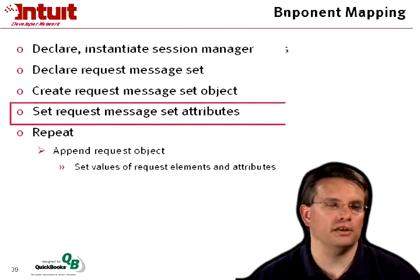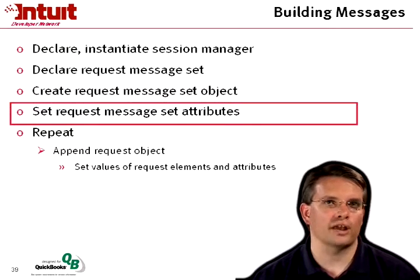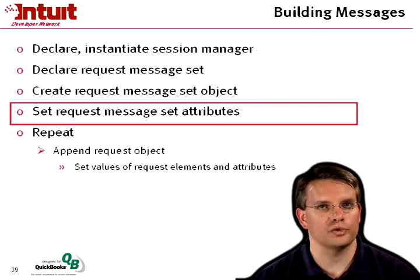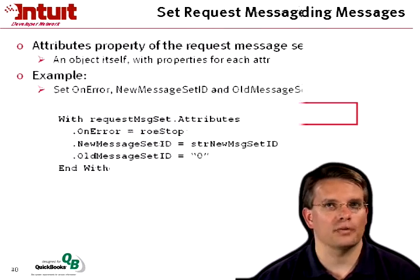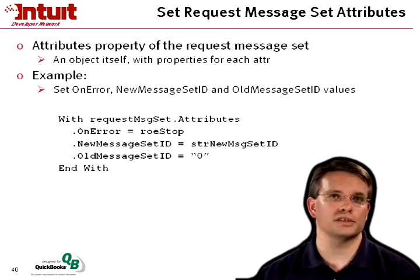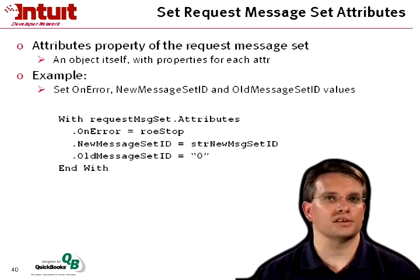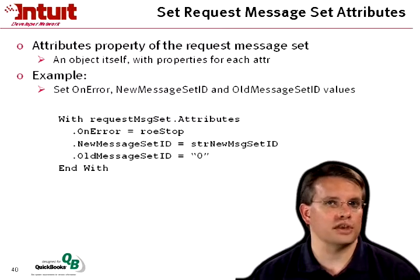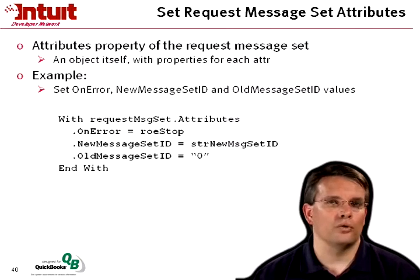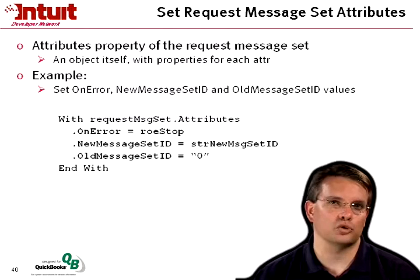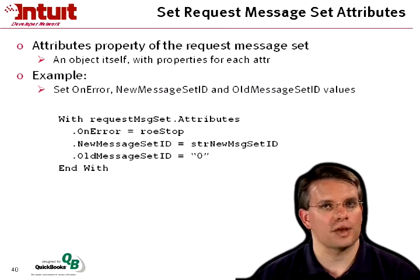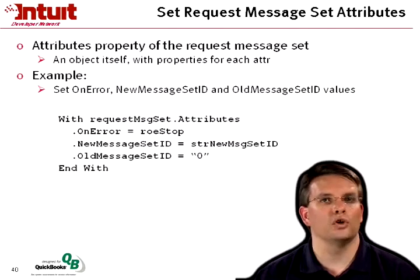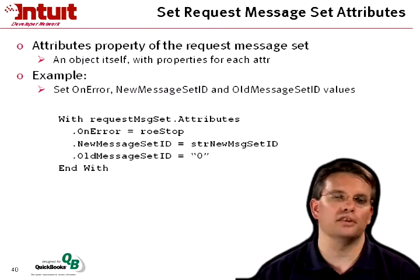To build a message, we declare and instantiate the session manager, create the request message set, and set it up. There's an attributes property on that request message set which is itself an object with properties for each attribute. The message request set has an onError, a new message set ID, and an old message set ID — used for error recovery. For example, I set onError to ROE_STOP, the new message set ID to some string, and the old message set ID to zero.